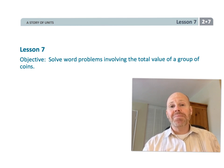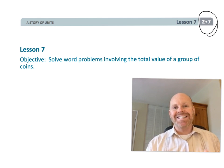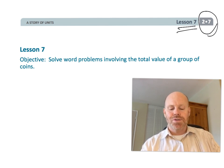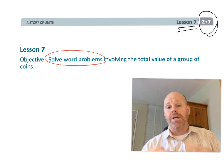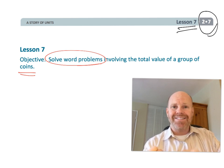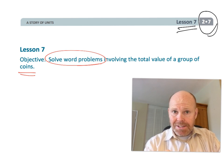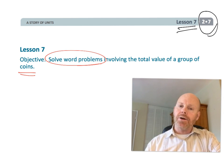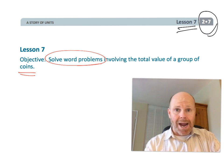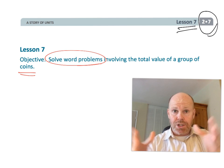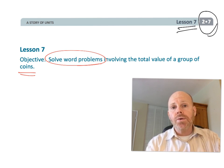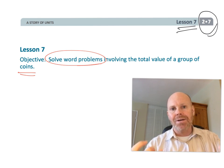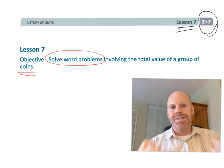This is second grade module 7 lesson 7, and in this lesson students are going to be solving word problems involving coins. Not only are students going to have to count the coins, but they're also going to be using prior knowledge of how to add and subtract using two digits within a hundred. Students are also going to be using tape diagrams to represent their thinking.